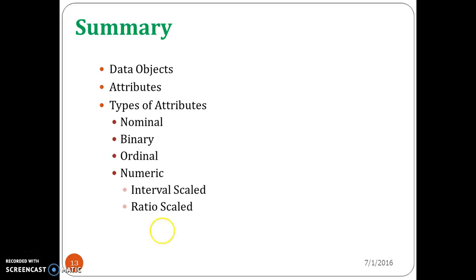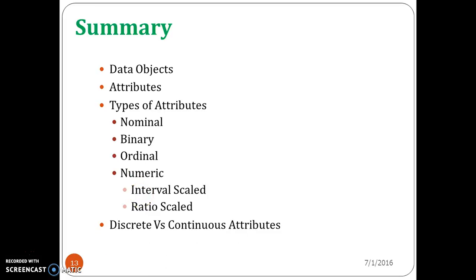Nominal, binary, and ordinal attributes are qualitative attributes, and numeric attribute is a quantitative attribute. Only the numeric attribute can have specific values, whereas in binary, nominal, and ordinal you can't have specific values. Nominal attribute is also called a categorical attribute; binary attribute is called a boolean attribute. Ordinal attribute provides ranking but you can't significantly measure the value between two items, whereas in numeric attribute you can measure the value between two objects. Apart from nominal, binary, ordinal, and numeric, you can also categorize attributes as discrete and continuous attributes.